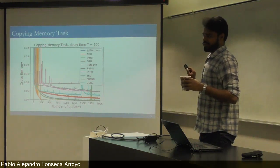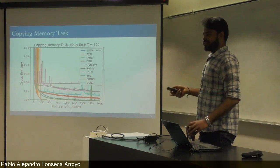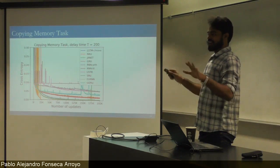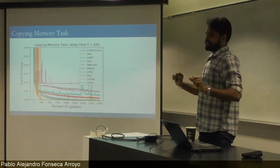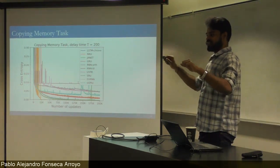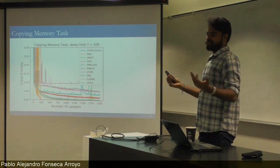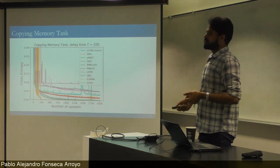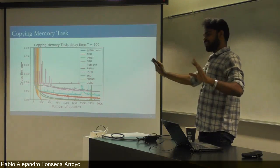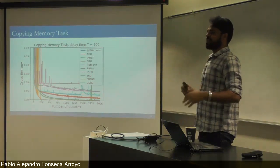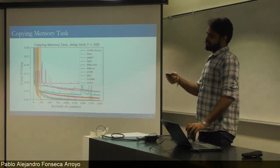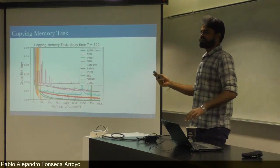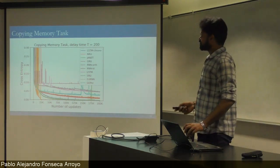For these experiments, architectures can be compared in three ways: matching number of parameters, matching number of hidden units, or matching number of free weights. We go with the first approach — matching the number of parameters — since there's no clear winner among the three and it's computationally expensive to run all three approaches.